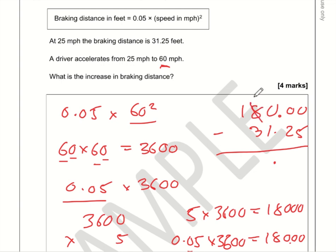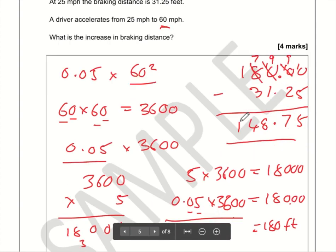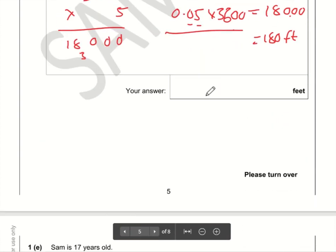Zero minus five can't be done. This column is empty, this column is empty, so this column will have to be raided. Eight goes to a seven, this zero becomes a 10 which will then turn into a nine to make this one a 10, and then this one becomes a nine to make this one a 10. 10 minus 5 is 5, 9 minus 2 is 7, 9 minus 1 is 8, 7 minus 3 is 4, 1 minus nothing is 1. So the answer is 148.75 feet.